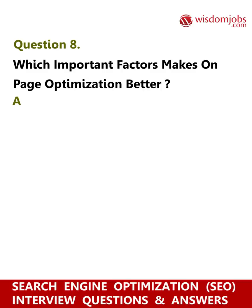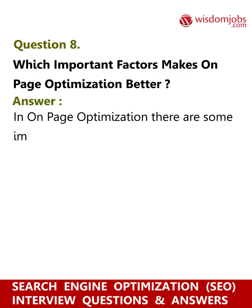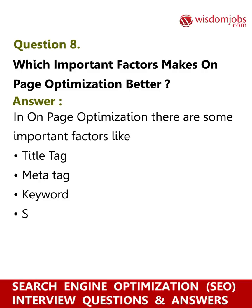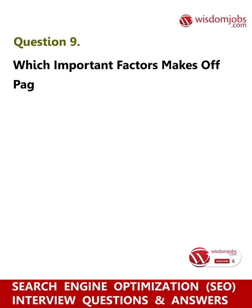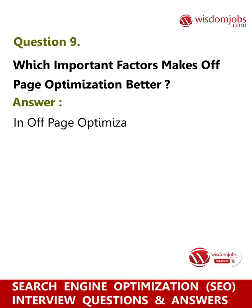Question 8: Which important factors make on-page optimization better? Answer: In on-page optimization there are some important factors like title tag, meta tag, keyword, sitemap, images, internal linking, and breadcrumb.